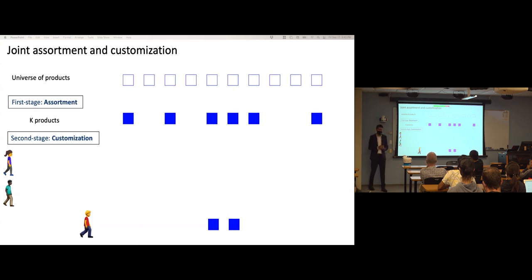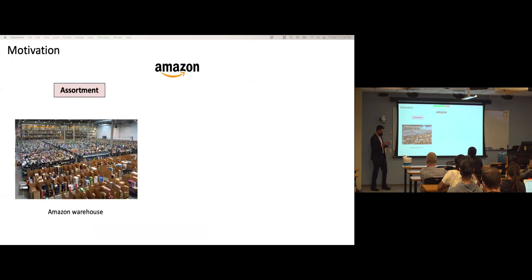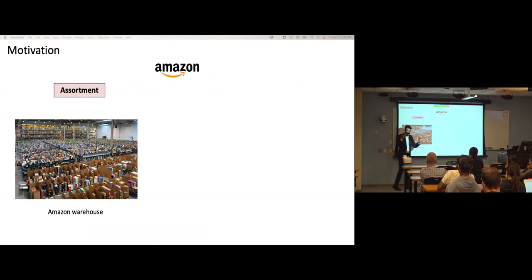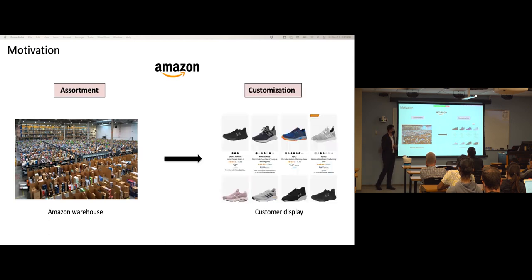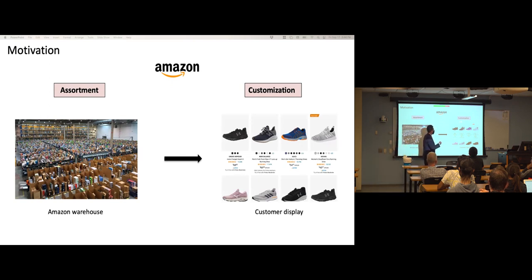The goal is to maximize the expected revenue of a firm from a customer visit. This is motivated by settings where assortment decisions are made before the start of the selling season. For instance, Amazon wants to sell running shoes — they go to vendors, select an assortment of products they can carry in their warehouses due to capacity constraints, but then also have personalized data about each individual on the platform and can show a customized subset at the display level.